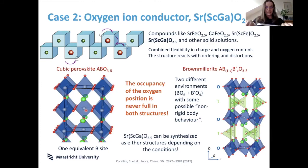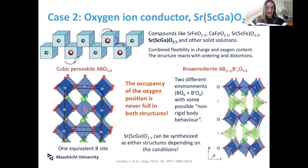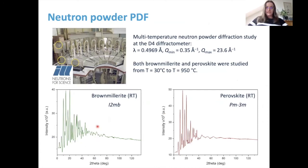The material I'm looking at — strontium scandium gallium oxide, SrScGaO₂.₅ or SSGO — can be synthesized as either a brownmillerite or a perovskite depending on synthesis conditions, and once you make the perovskite it's stable. Both of these materials are oxygen ion conductors: above about 500°C you really see a drop in weight because the material is physically spitting out oxygen. But how is it possible that two completely different structures show coherent oxygen conduction behavior?